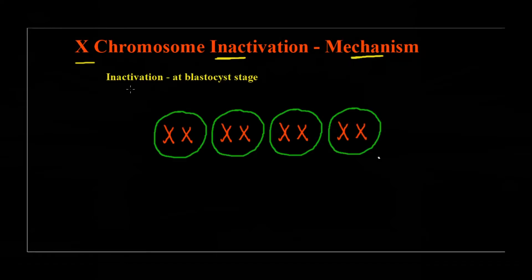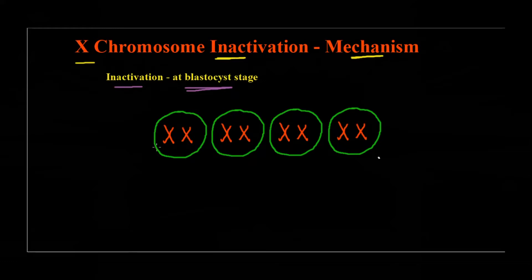Let's begin. If you remember, we saw that inactivation of the X chromosome occurs during embryonic development at the blastocyst stage. What happens during this is that in each cell of the embryo — and when I say cell, I'm showing the nucleus here — one of the two X chromosomes would undergo inactivation, and this process is random: 50/50 chance. It can be either the paternal chromosome or the maternal chromosome.